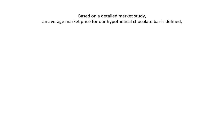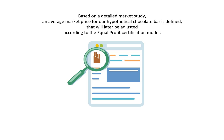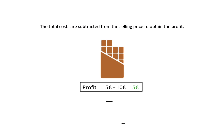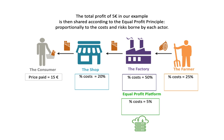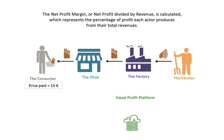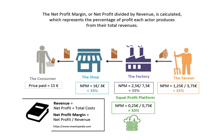Based on a detailed market study, an average market price for our hypothetical chocolate bar is defined, which will later be adjusted according to the Equal Profit certification model. The total costs are subtracted from the selling price to obtain the profit. The total profit of 5 euros in our example is then shared according to the Equal Profit Principle, proportionally to the costs and risks borne by each actor. The net profit margin, or net profit divided by revenue, is calculated, which represents the percentage of profit each actor produces from their total revenues.